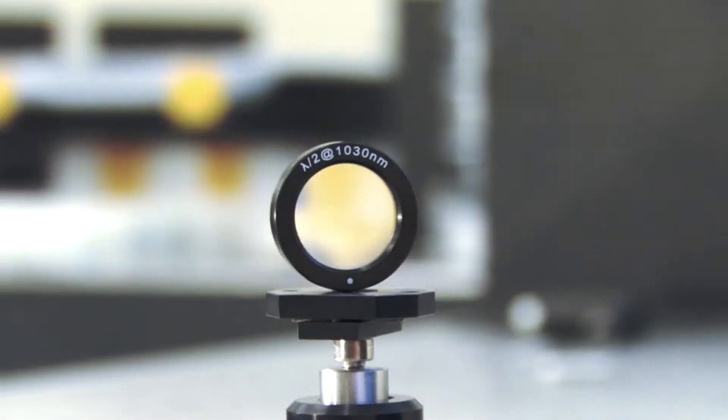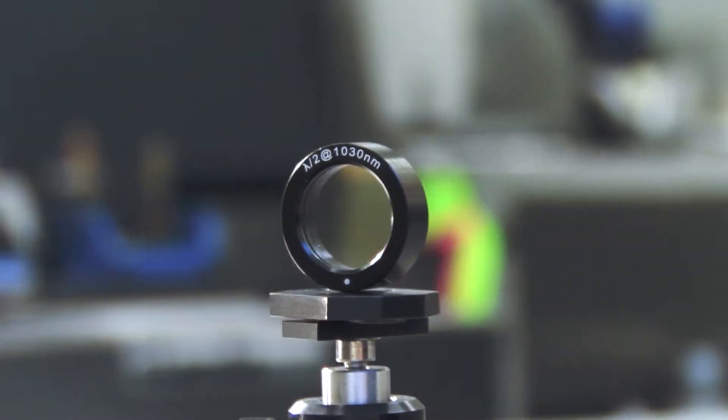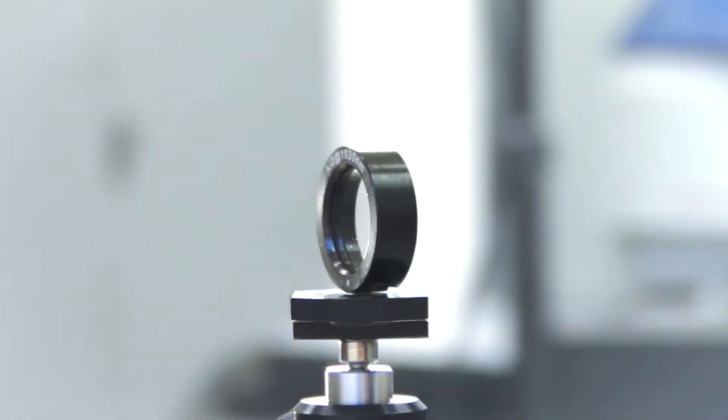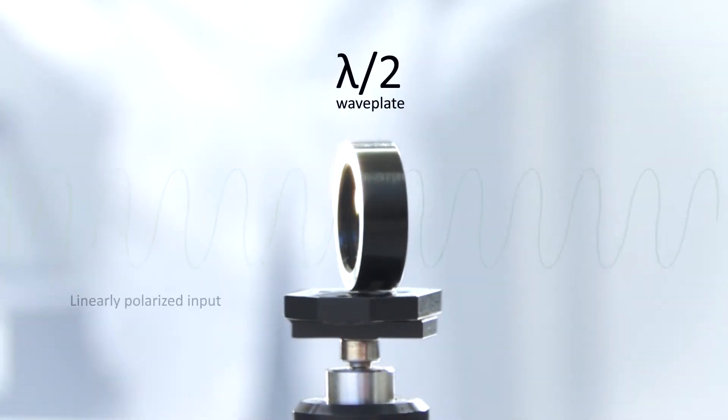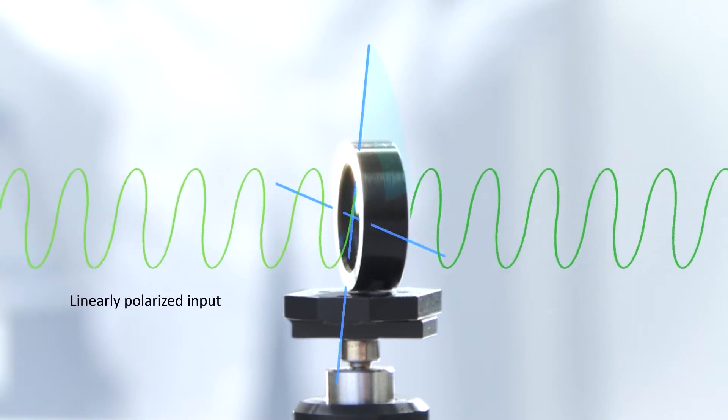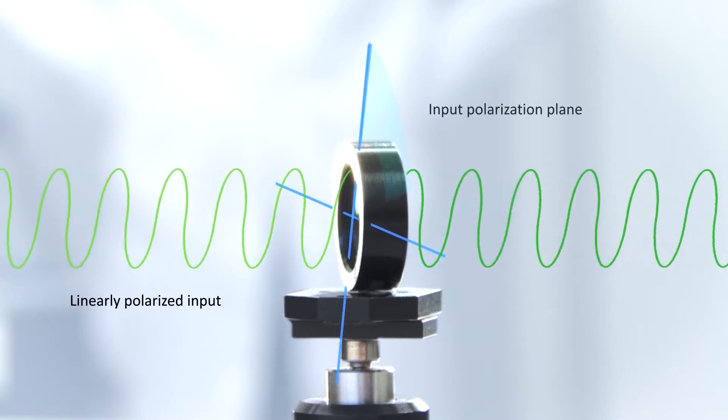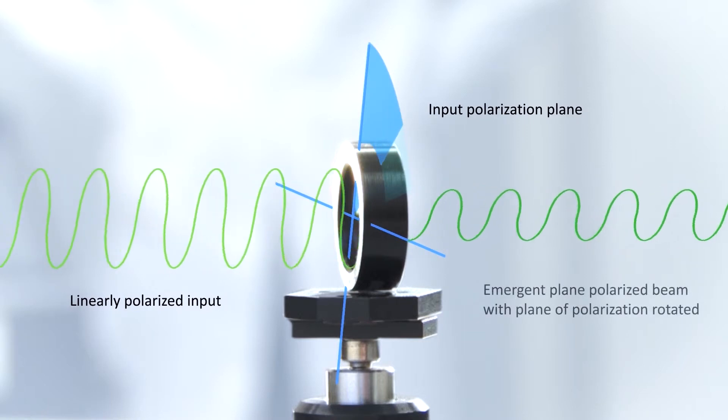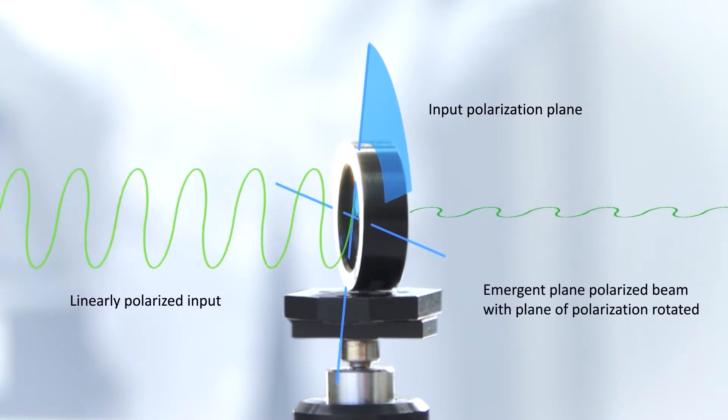Our crystalline quartz wave plates are made of excellent quality laser-grade crystalline quartz material which exhibits birefringence. Zero-order wave plates are made of two quartz plates with their fast axes crossed. The thickness of wave plates determines the phase difference at any specific wavelength.